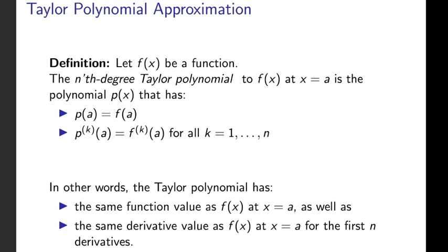So the nth degree Taylor polynomial to f of x at x equals c is the polynomial p of x that has p of c equal to f of c, and then all of the derivatives up to the nth derivative of the polynomial p of x agree with the original function at the value c that we're interested in.